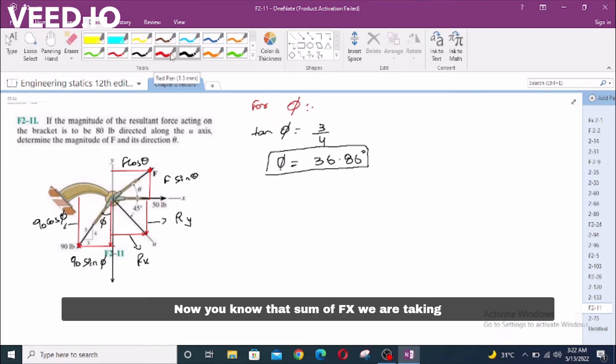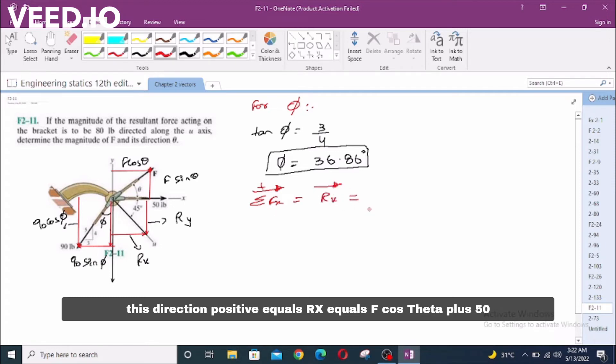Now we know that sum of Fx, we are taking this direction positive, equals Rx equals F cos theta plus 50 lb minus 90 sin phi.